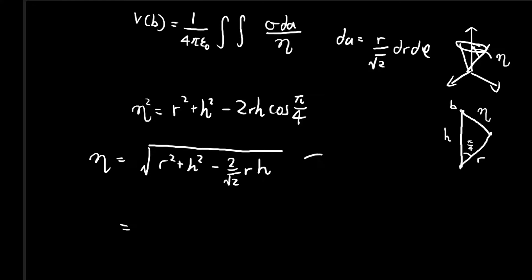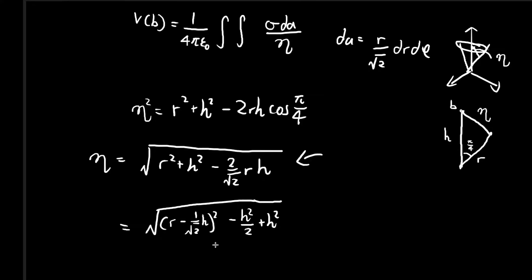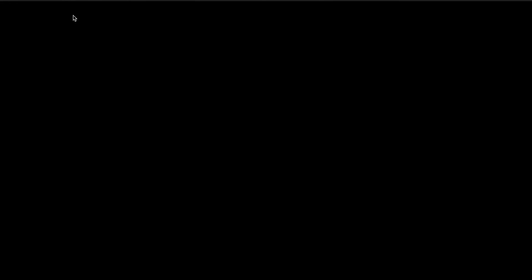Because this expression looks ugly, in order to save some steps in the future, I'm going to complete the square. When we complete the square, we get something like (r − h/√2)² − h²/2 + h². If you don't believe they're equal, you can expand to verify. This gives us a slightly cleaner expression, and using this we can rewrite the integral into something workable.